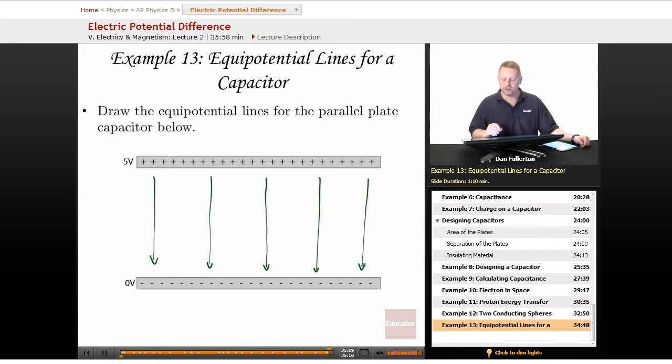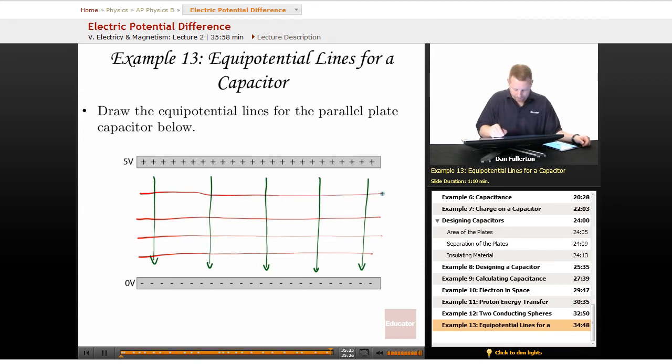And then we know that equipotentials are always crossing electric field lines perpendicularly, at right angles. So I could draw my equipotentials that way. And if this is 0 volts, that'll be maybe 1, 2, 3 volts, 4 volts, 5 volts.